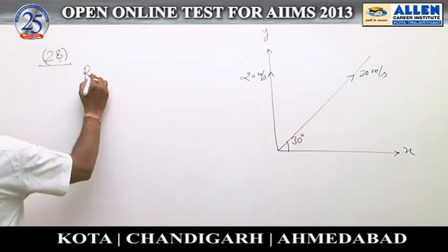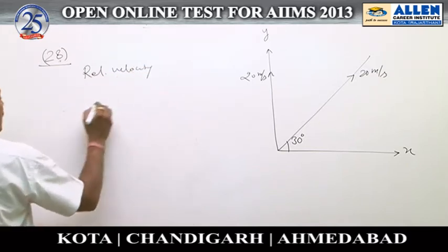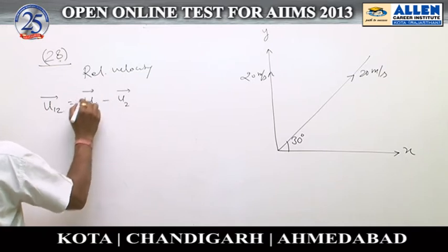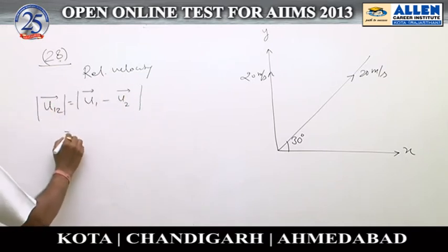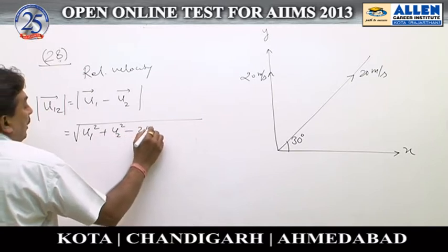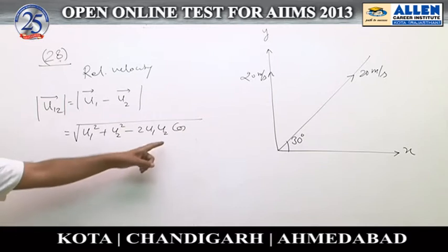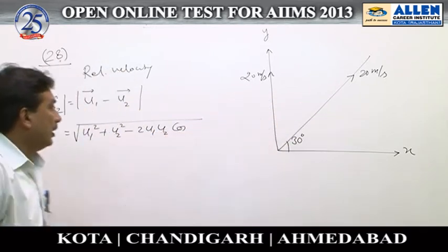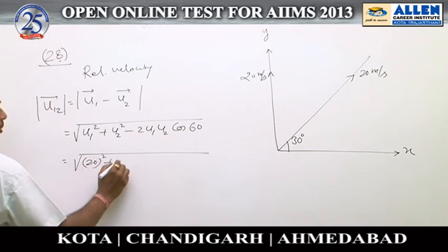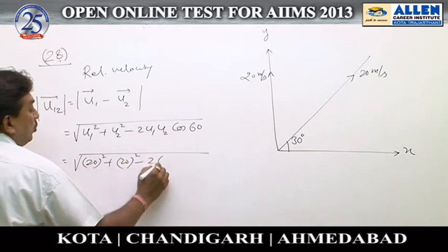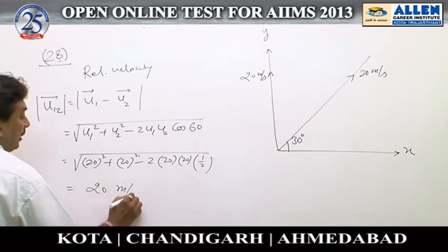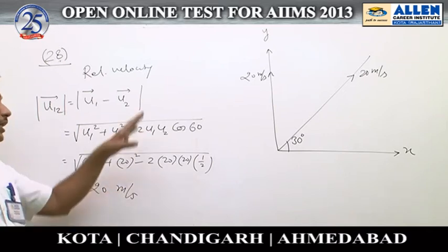...we can write down relative velocity: u12 equals u1 minus u2. Taking the magnitude on both sides, that is the square root of u1 squared plus u2 squared minus 2·u1·u2·cos(θ). The angle between both directions of velocities is 60 degrees, so cos 60. With u1 = 20 and u2 = 20: 20 squared plus 20 squared minus 2 times 20 times 20 times one-half. This gives a relative velocity of 20 meters per second. Since relative acceleration is constant...